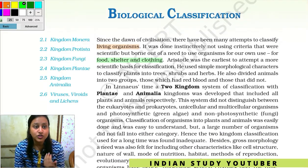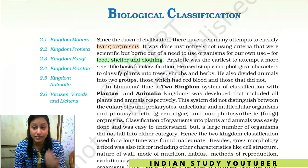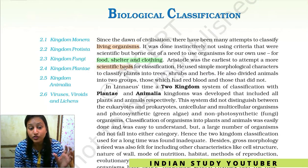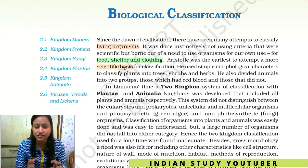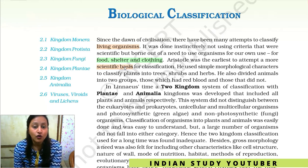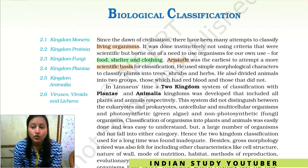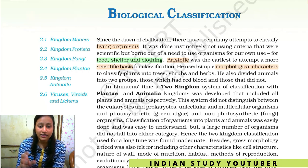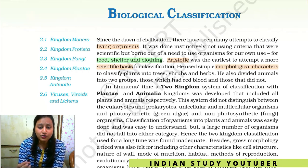After that, the first person who tried to classify organisms on the basis of scientific reasons was Aristotle. He didn't just think of using organisms for practical purposes, but tried to classify them based on scientific criteria and characteristics.